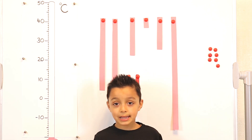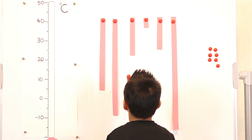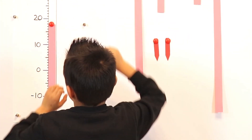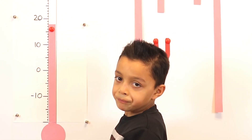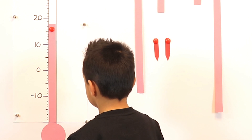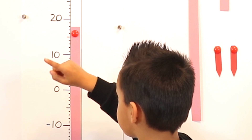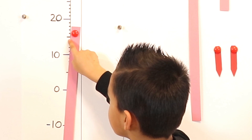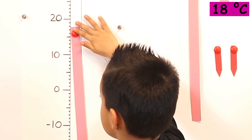So let's start measuring some temperatures. Let's take our first strip. Can you put it on your thermometer? So now can you tell us what temperature is your thermometer reading? So if this is zero, this is ten — ten, eleven, twelve, thirteen, fourteen, fifteen, sixteen, seventeen, eighteen. Eighteen.